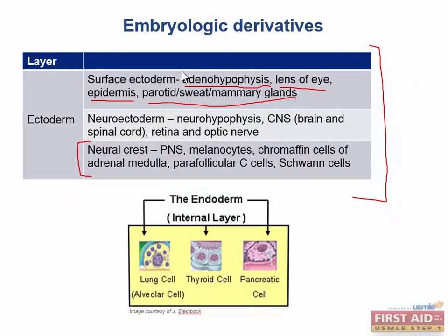For neural crest, melanocytes are very high-yield, and occasionally odontoblasts are mentioned. Chromaffin cells of the adrenal medulla — these are the ones that secrete catecholamines. Parafollicular C cells of the thyroid secrete calcitonin, and Schwann cells are responsible for myelination of peripheral nerves. Whereas oligodendrocytes are actually neuroectoderm, responsible for myelination in the CNS. For neuroectoderm, don't forget astrocytes and oligodendrocytes.